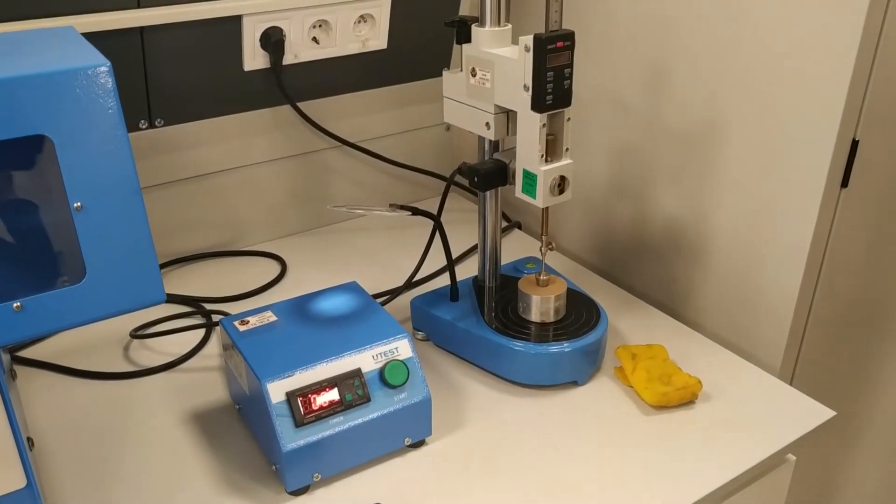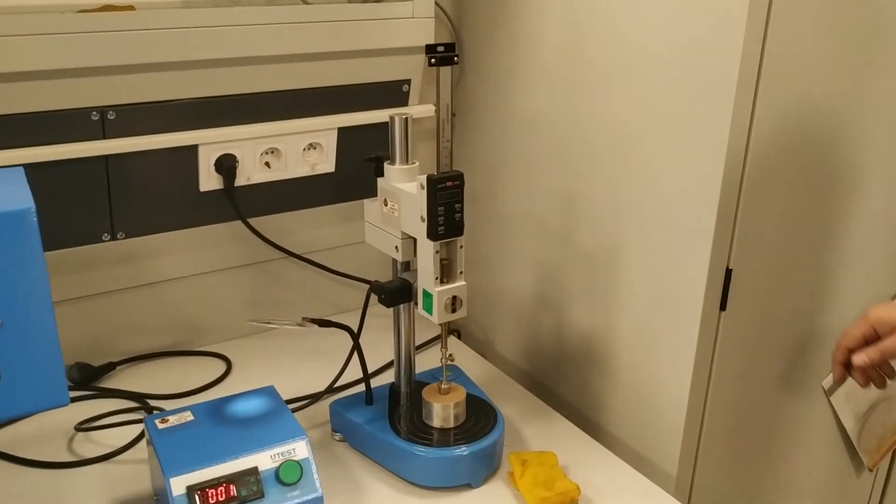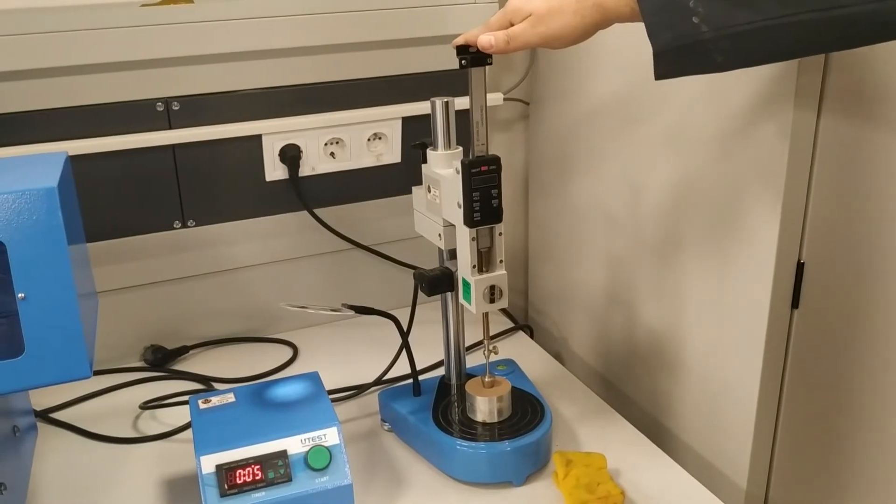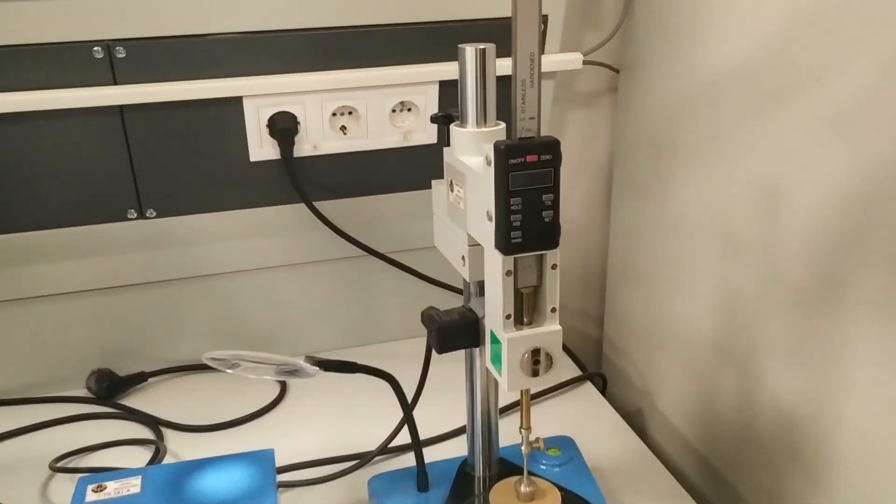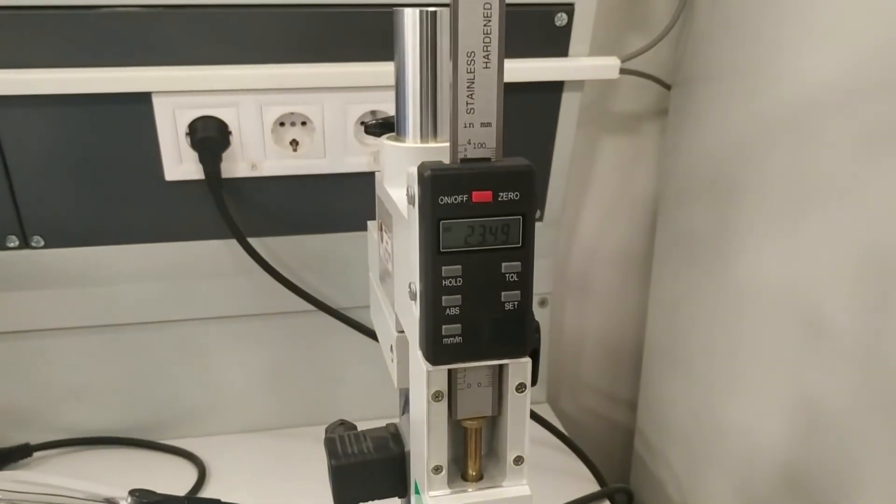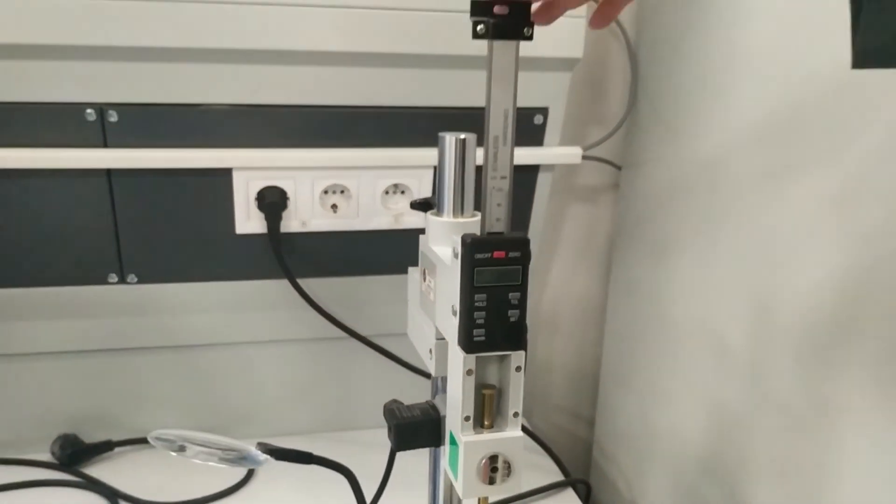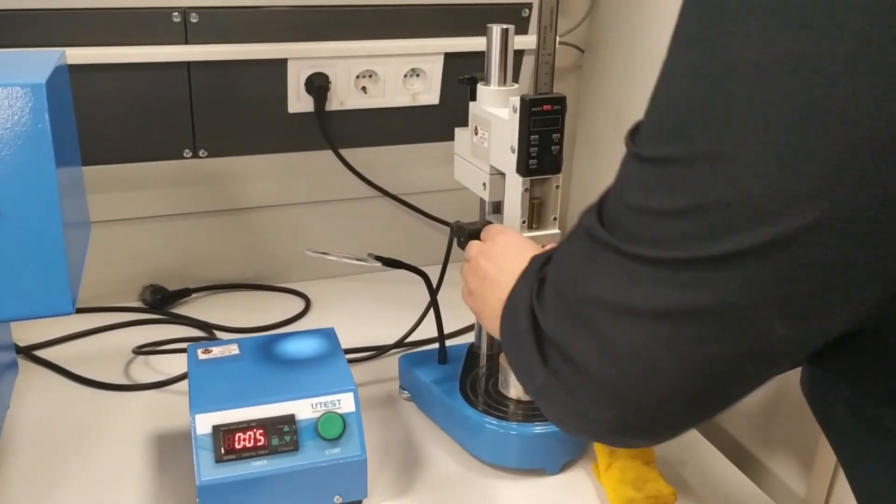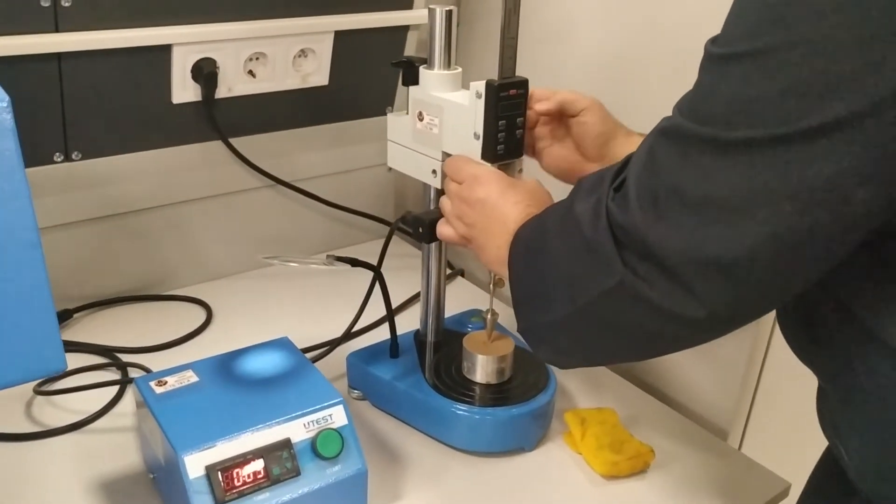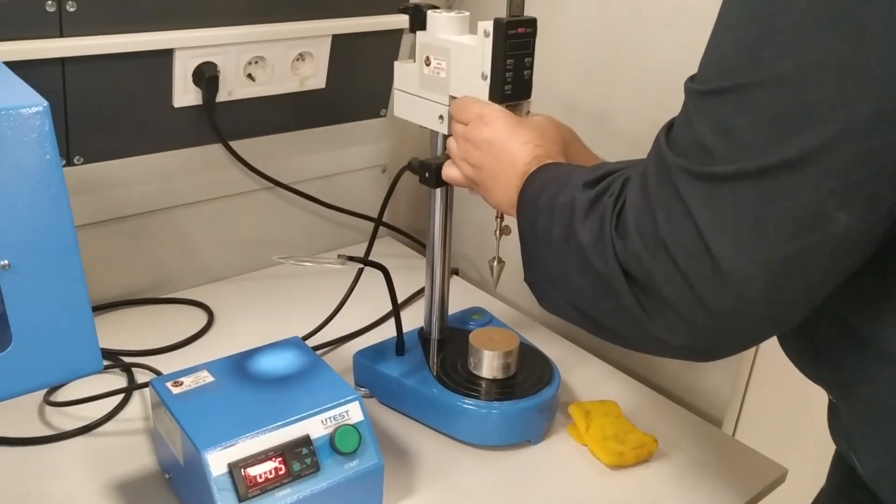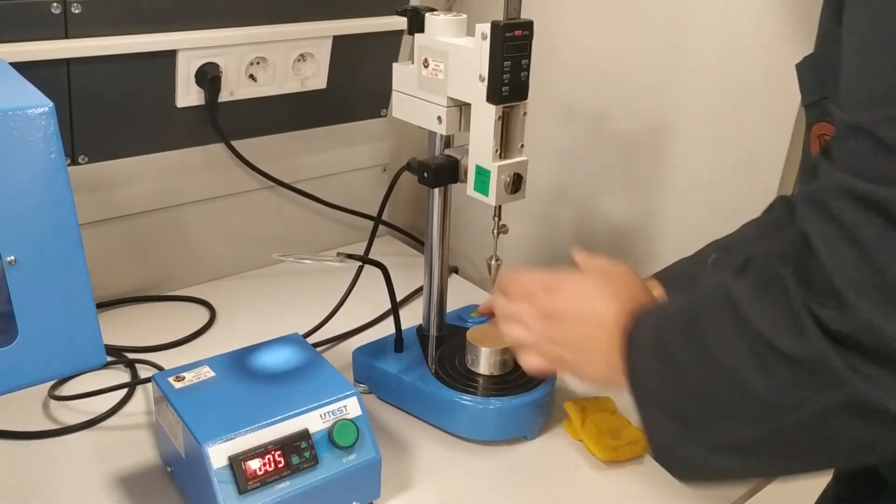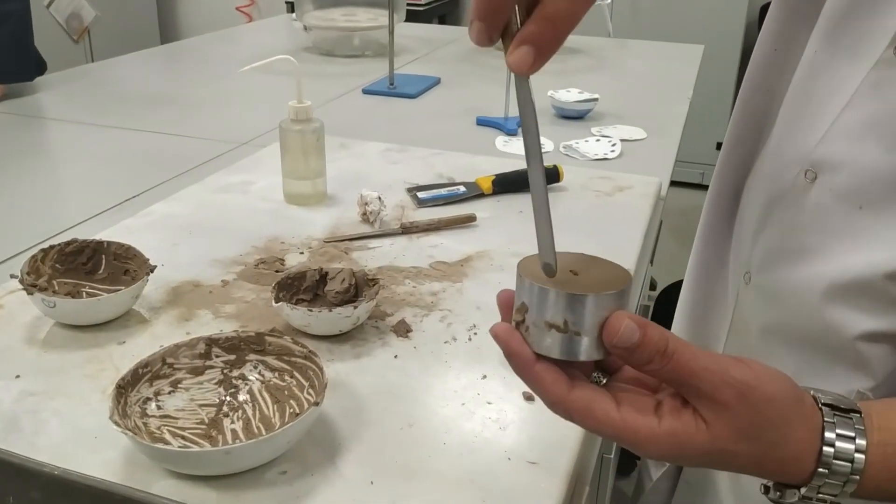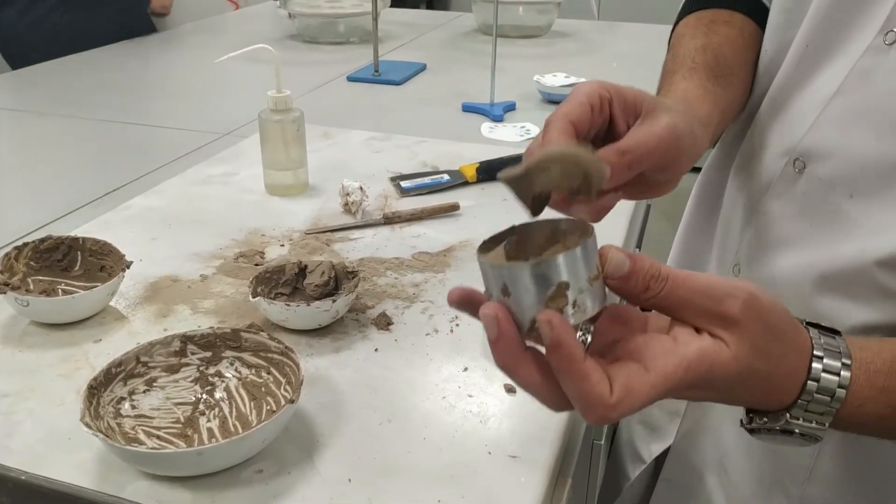If the depth of penetration is within the required range, lift the cone out and clean it, being careful to avoid scratching its surface. Add a little more remolded paste to the cup, taking care not to trap air. Level the surface and repeat the fall cone test a second time. The difference between two successive readings should be less than 0.4 millimeters for the 60 gram cone and less than 0.5 millimeters for the 80 gram cone.